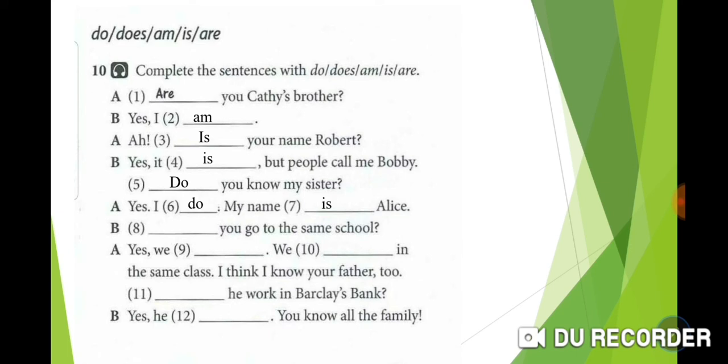Number 8: You go to the same school. The verb go needs a helping verb in questions, which is do because we have the pronoun you. Do you go to the same school? Yes, we do. We in the same class—we need a verb. We don't have a verb in the sentence, so we use: We are. We are in the same class.